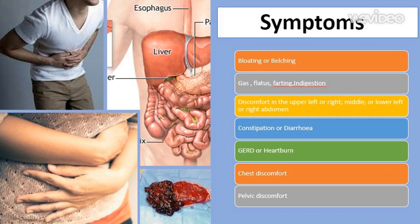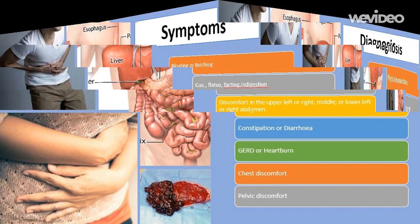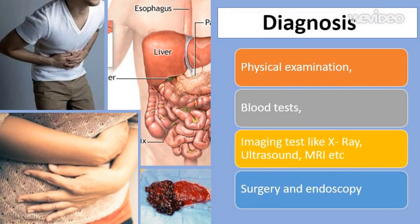The cause of abdominal pain is diagnosed on the basis of its characteristics, the physical examination, and testing. Occasionally, surgery is necessary for diagnosis. The medical diagnosis of the cause is challenging because the characteristics may be atypical, tests are not always abnormal, and diseases causing pain may mimic each other.